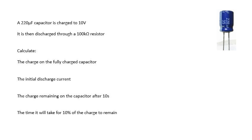You should be able to do these questions now. Have a go and I'll show you the answer in 3, 2, 1. The charge on the fully charged capacitor, that's just Q equals CV. The initial discharge current will just be V over R, so I equals V over R, because V to start with will be 10. So the initial discharge current will be I equals V over R. The charge remaining on the capacitor after 10 seconds, we use our equation Q equals Q naught E to the minus T over RC. Hopefully you can work out the charge remaining after 10 seconds. The time it will take for 10% of the charge to remain, I'll talk about that one.